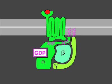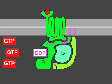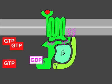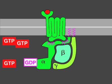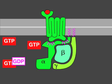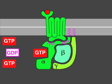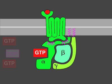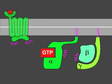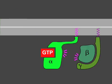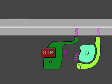In either case, an activated receptor induces a conformational change in the alpha subunit, causing the GDP to dissociate. GTP, which is abundant in the cytosol, can now readily bind in place of the GDP. GTP binding causes a further conformational change in the G-protein, activating both the alpha subunit and beta-gamma complex.